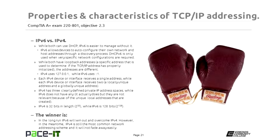IPv4 has three clearly defined private IP address spaces, while IPv6 does not have private IP address spaces in the same way. IPv4 is a 32-bit binary addressing scheme; IPv6 is 128 bits. In the long run, IPv6 will take over, but that's not going to happen anytime soon. So in the meantime, you need to learn how to work with both IPv4 and IPv6 — and remember that currently in most networks, IPv4 is the much more common addressing scheme.